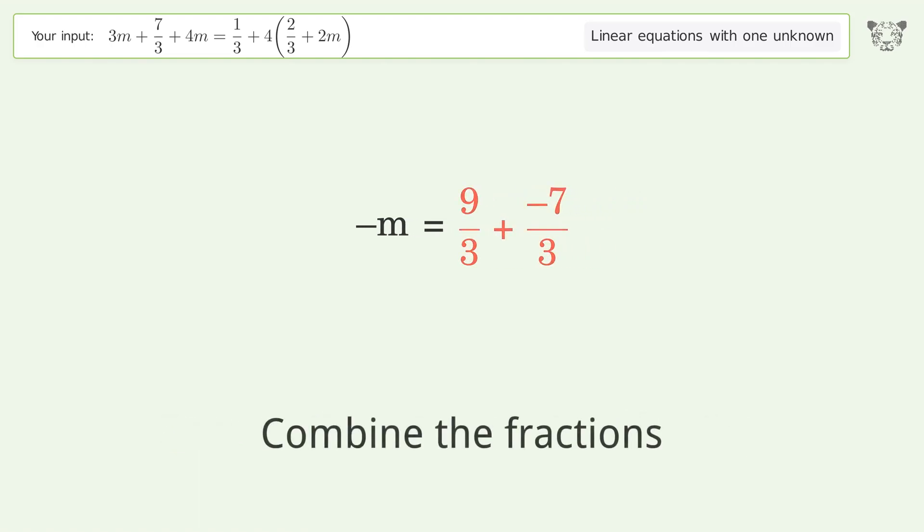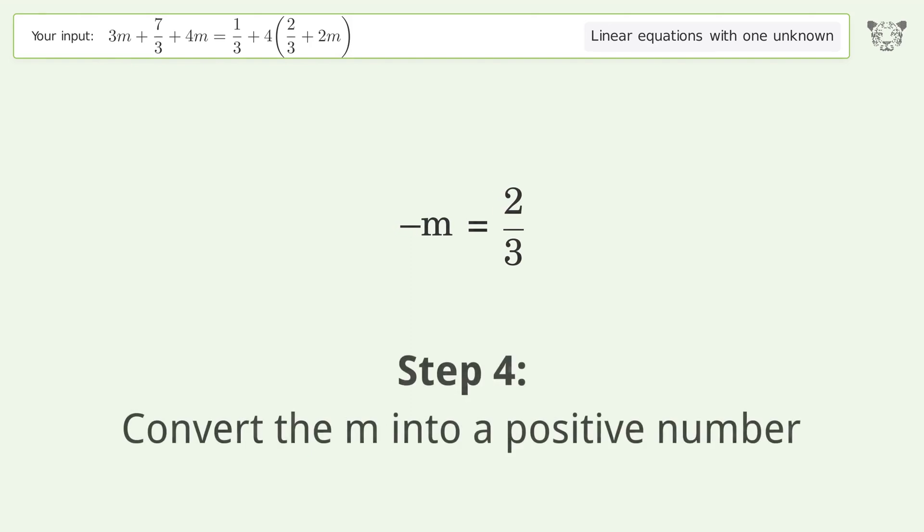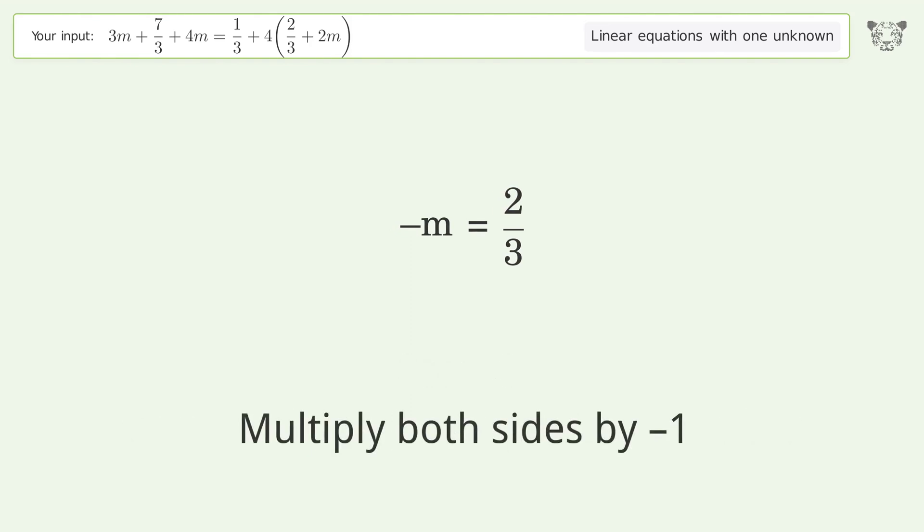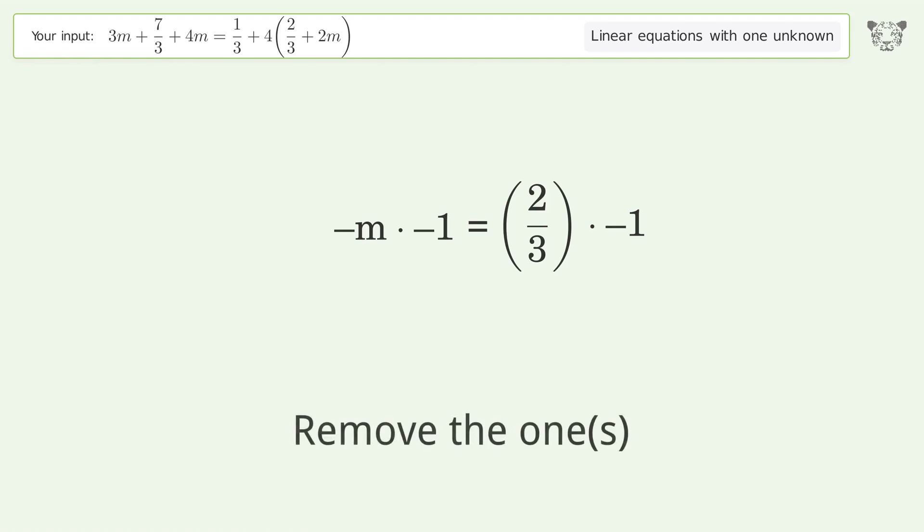Combine the fractions. Combine the fractions. Combine the numerators. Convert the m into a positive number. Multiply both sides by negative 1. Remove the 1s.